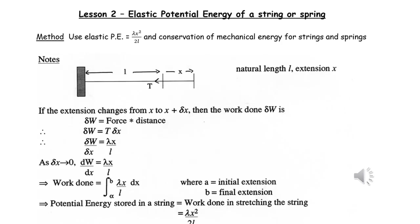The elastic potential energy stored in a stretched spring or string or a compressed spring is given by the formula elastic PE equals lambda x squared over 2L, and the derivation of this formula is here.